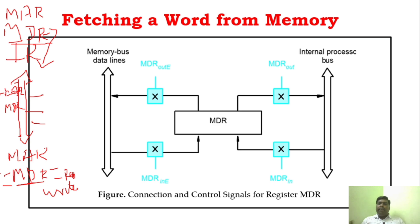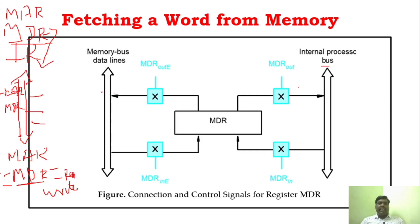Now let's understand MAR and MDR in depth. MDR has two inputs and two outputs. You can see it is connected to the internal bus and also to the external memory bus. It has four control functions — two for controlling the internal bus and two for controlling the external bus.